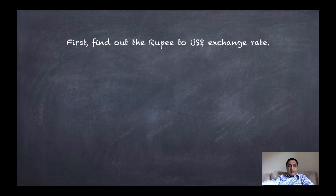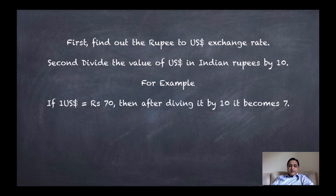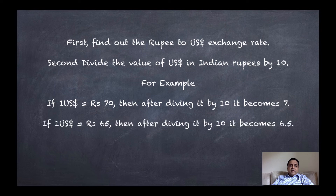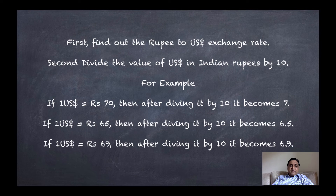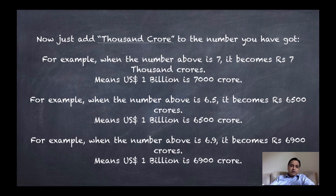Let me show you the trick. First, find out the rupee-to-US-dollar exchange rate. Second, divide the exchange rate value by 10. For example, if 1 US dollar equals ₹70, then dividing by 10 gives 7. If the rate is ₹65, dividing by 10 gives 6.5. If the rate is ₹69, dividing by 10 gives 6.9. Now just multiply that number by 1,000 crores and you have how much 1 US dollar billion equals in Indian rupees. So when the exchange rate is 70, 1 billion dollars equals 7,000 crores rupees.